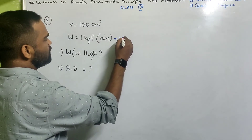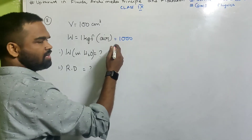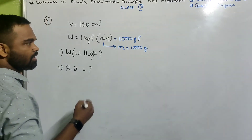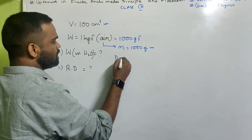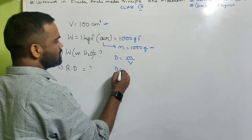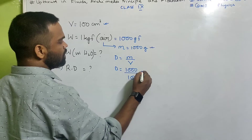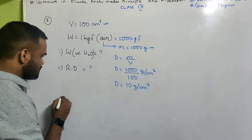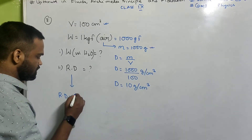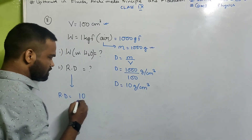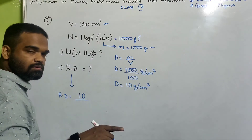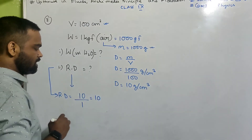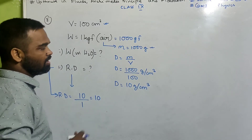Density = 1000 ÷ 100 = 10 g/cm³ in CGS unit. Relative density = density of the substance in CGS ÷ density of water in CGS at 4°C = 10 ÷ 1 = 10. Relative density of the body is 10 — no unit, it's a pure number, it's a ratio.